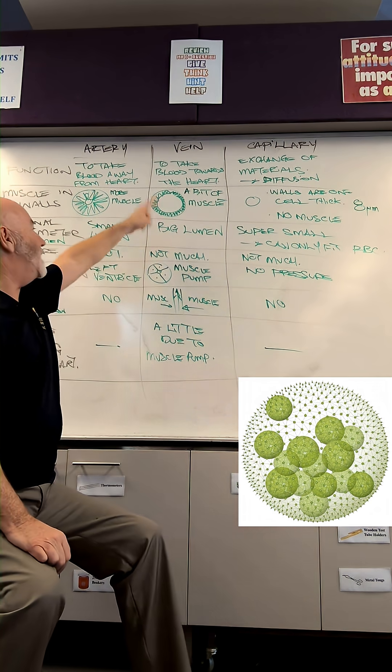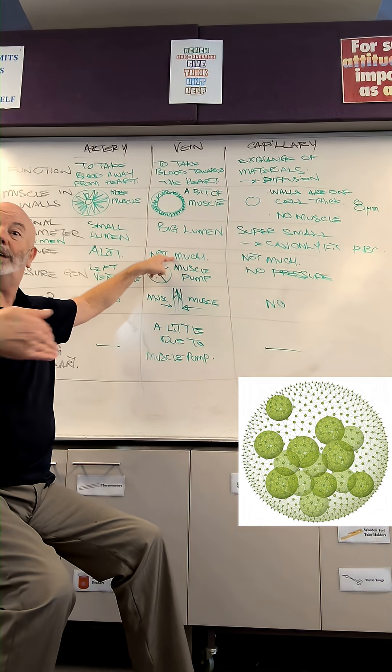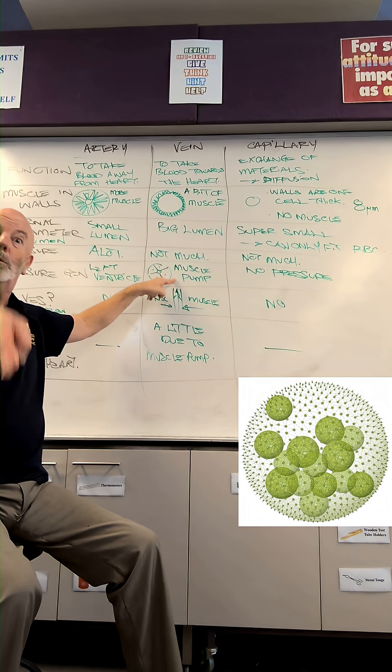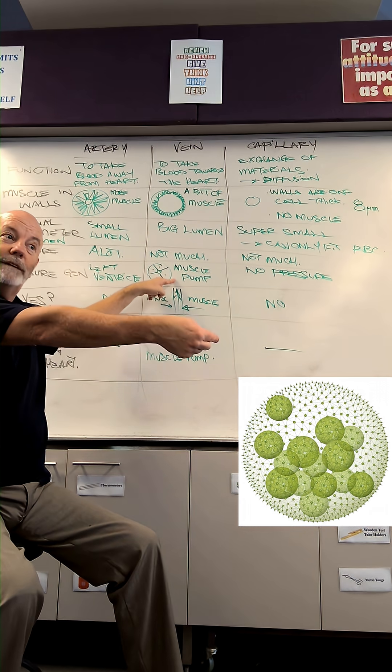The pressure in a vein is not very much at all because it has to slow down for the exchange of materials in the capillaries. Therefore, it needs to generate more pressure from the muscle pump as the vein goes through the middle of a muscle.